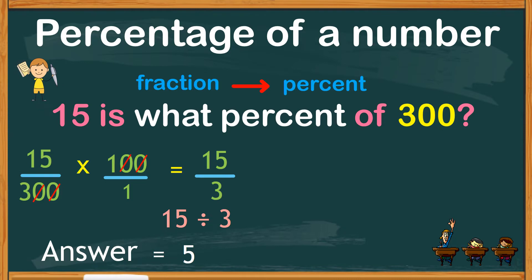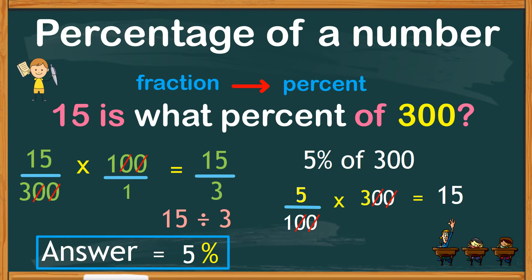So 15 of 300 is 5%. We can check if our answer is correct. Let's see if 5% of 300 is 15. So 5 over 100 times 300. Cancel the two zeros in the number above. Do the same with the two zeros in the number below. Now we have 5 times 3, which is 15. Therefore, our answer is correct.